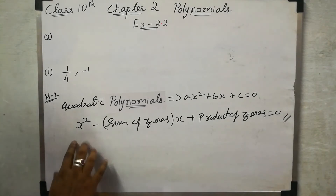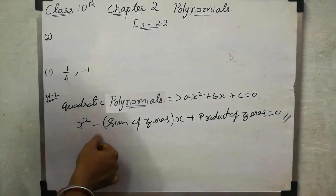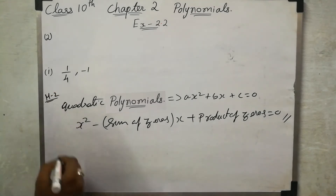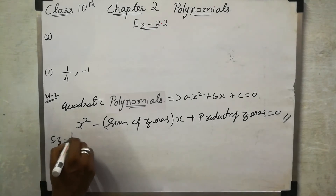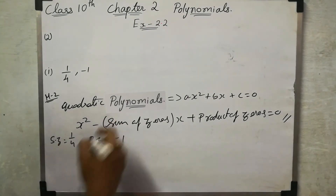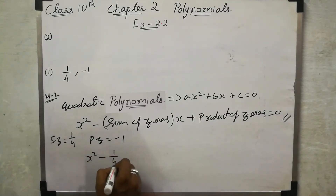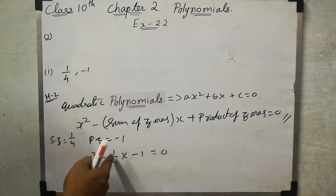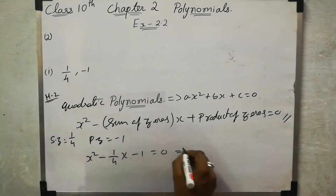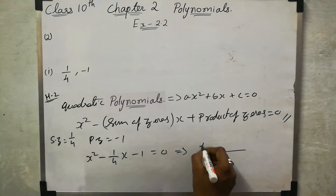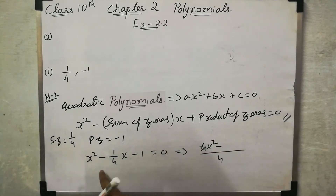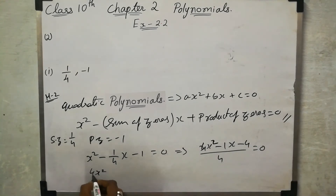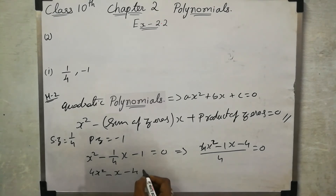In the form, x squared minus (sum of zeros) times x plus (product of zeros) equal to 0. Substituting: sum of zeros is 1 by 4 and product of zeros is minus 1. So we get x squared minus (1/4)x plus (minus 1) equal to 0. Since we have a fraction, we take LCM as 4, giving 4x squared minus x minus 4 equal to 0.